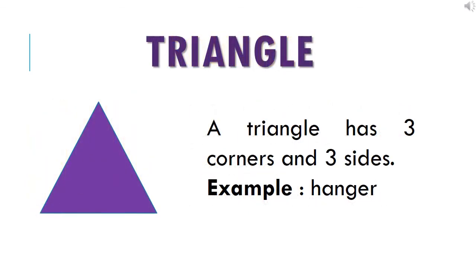The next one is triangle. A triangle has 3 corners and 3 sides. Example of triangle is hanger.